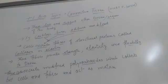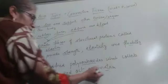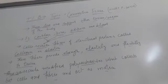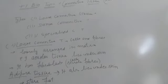Which collects between the cells and between the fibers. And that acts as a matrix. Now, the connective tissue is basically three types.